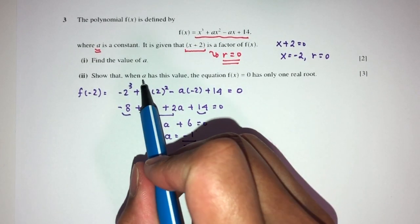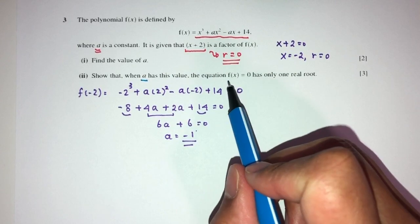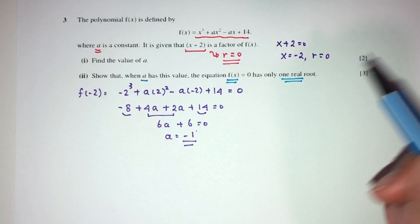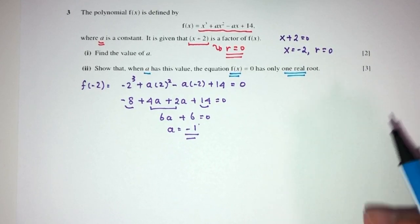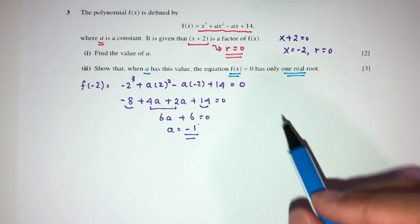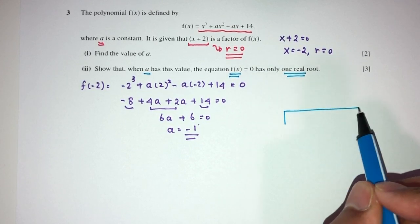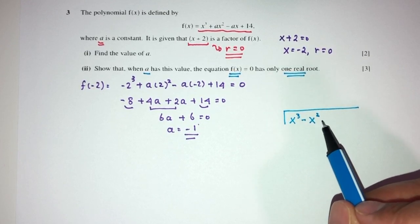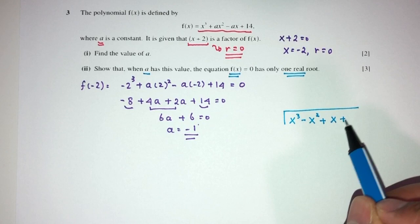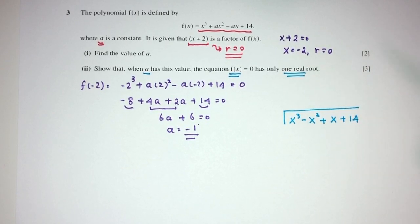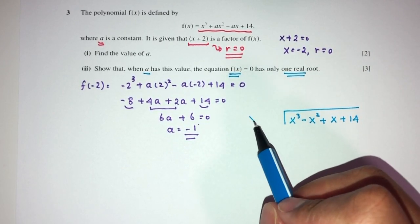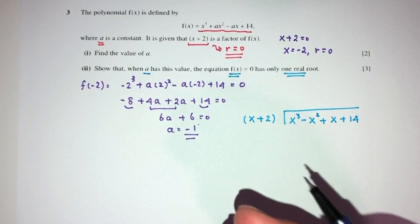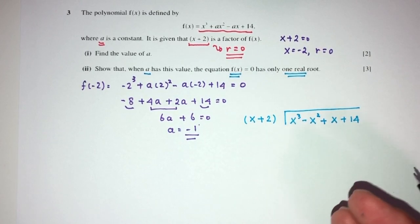Now when a has this value, which is minus 1, we have to show that this equation has only one real root. Let's try to show this. We have now the equation is f of x equals x cubed minus x squared plus x plus 14. This is my equation for f of x. We do know when you divide by this one, this is my factor, you have no remainder. I'm trying to find the other factor of my function.